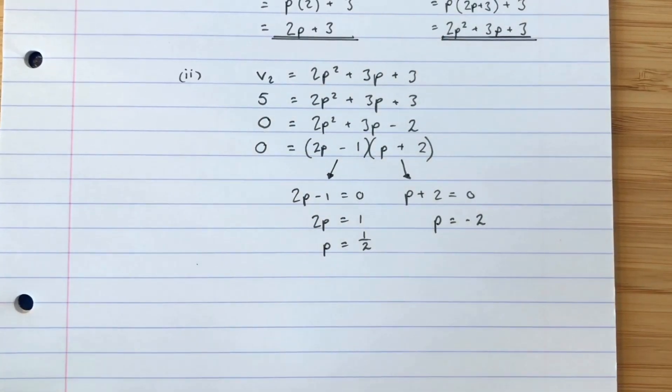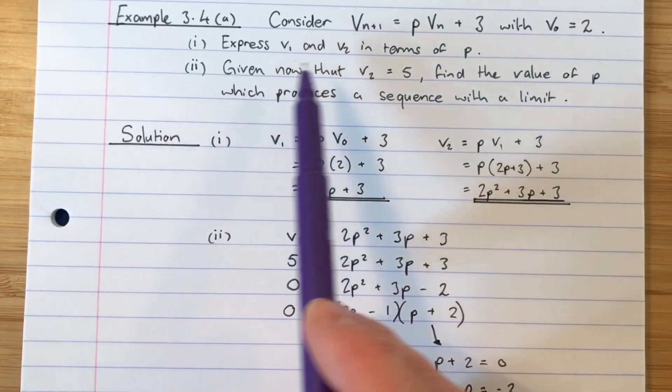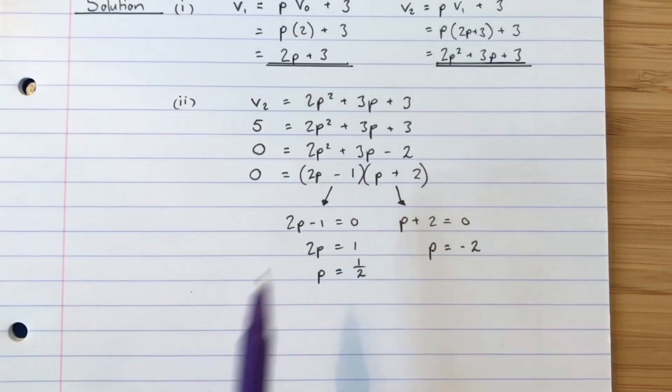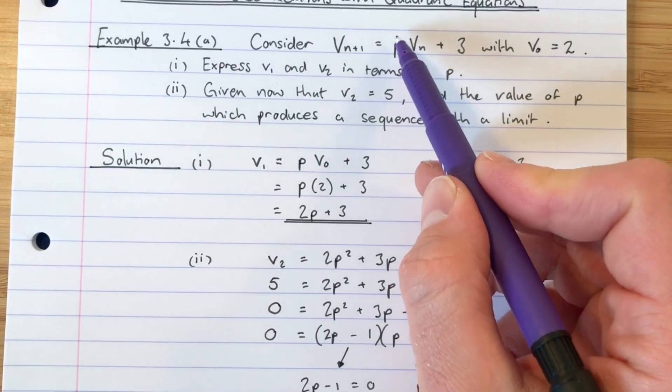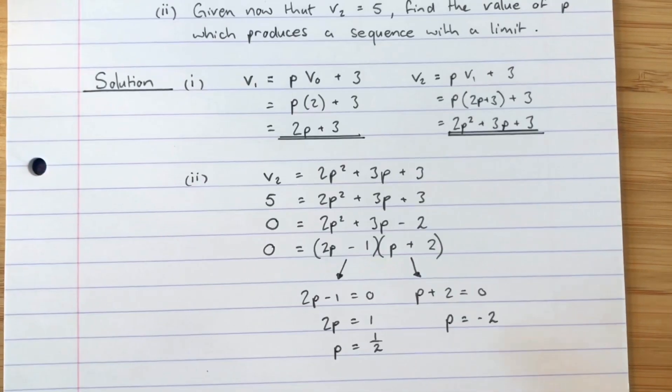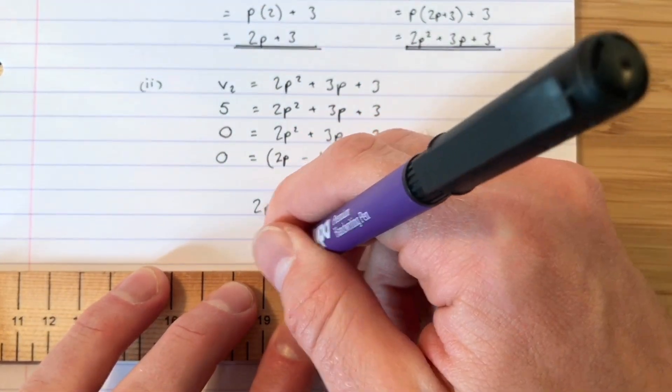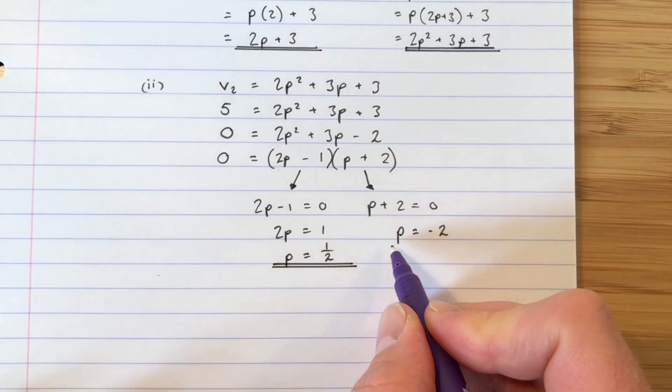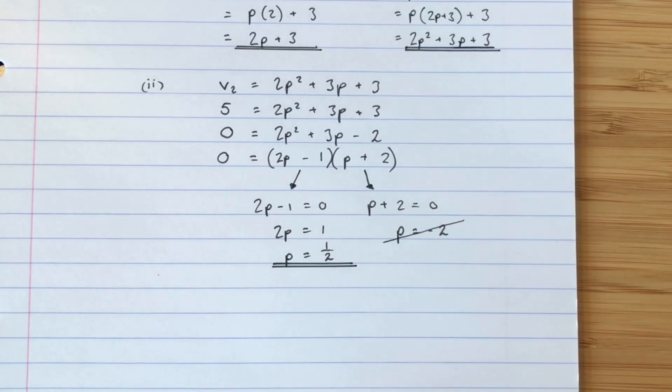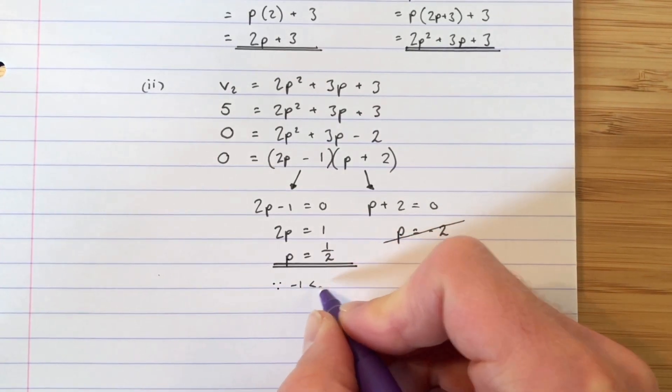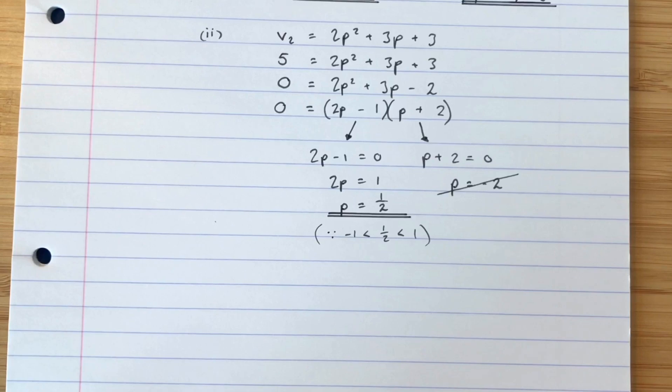So we've got two possible solutions and this happens all the time in higher maths, you get two possible solutions. Whenever you do you have to think to yourself do I actually want two solutions? It only wants one value, it wants the value of p which produces a sequence with a limit. So if p were negative 2, if that number in there was negative 2, that's going to have no limit, that's going to ping pong and then disappear to infinity. If p was a half then that's going to converge towards a limit, so this one is the one we want and this one gets discarded. Now when you are discarding don't scribble it out so I can't see it. Put a line through it but make sure I can actually tell what it said. So p is equal to a half is the only possible solution. Now you have to explain why, so we are going to say since negative 1 is less than a half is less than 1, so we've picked that one because that was between negative 1 and 1 and we know that that is the condition for a limit to exist. So p equals a half.